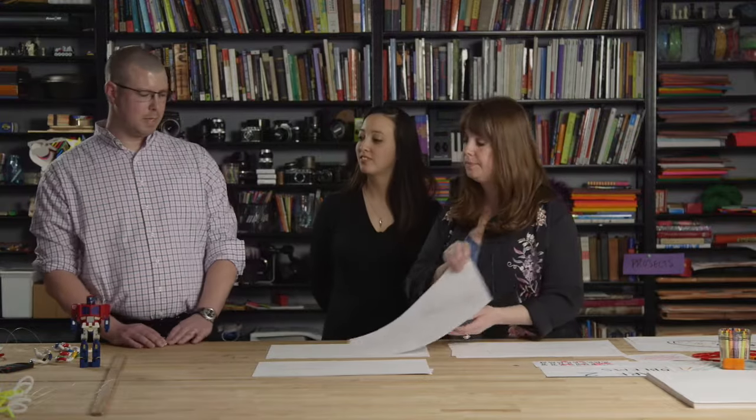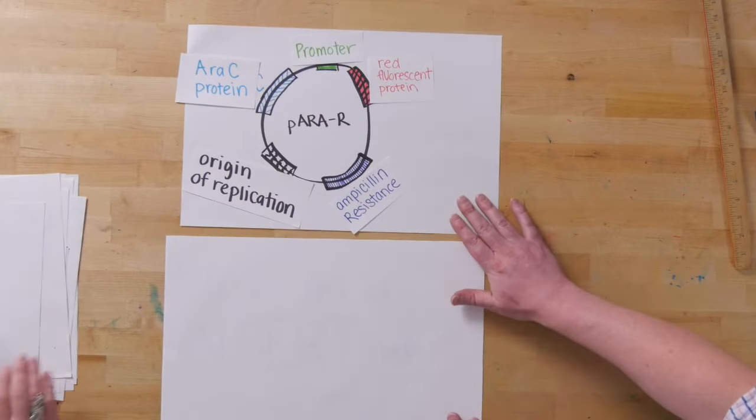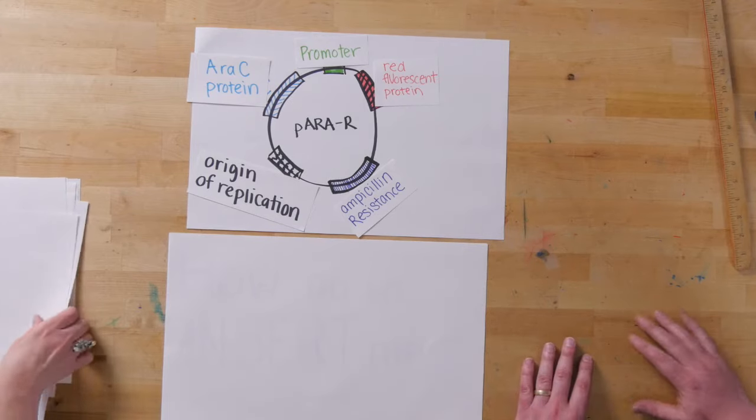What are plasmids? Plasmids are small little chunks of DNA that are used to carry all sorts of useful information. For us, they're a tool that allows us to produce different genes and different proteins of interest.